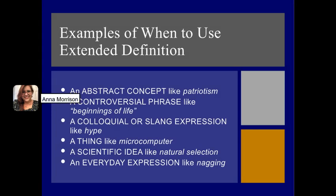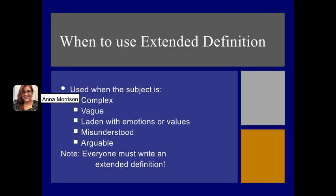Here are some examples of when to use an extended definition: when explaining an abstract concept like patriotism, a controversial phrase like the beginnings of life, a colloquial or slang expression such as hype, a thing like a microcomputer, a scientific idea like natural selection, or an everyday expression like nagging. These are all multifaceted, complex terms. We use extended definition when the subject is complex, vague, laden with emotions or values, misunderstood, or arguable.